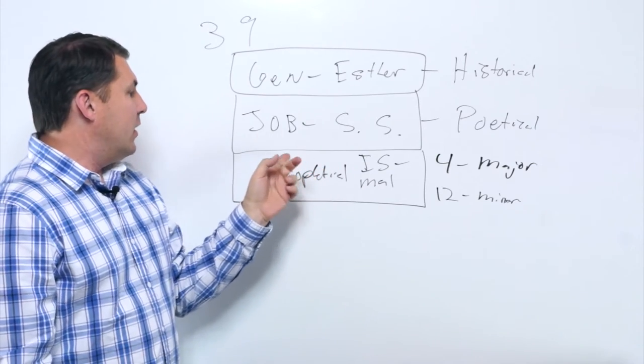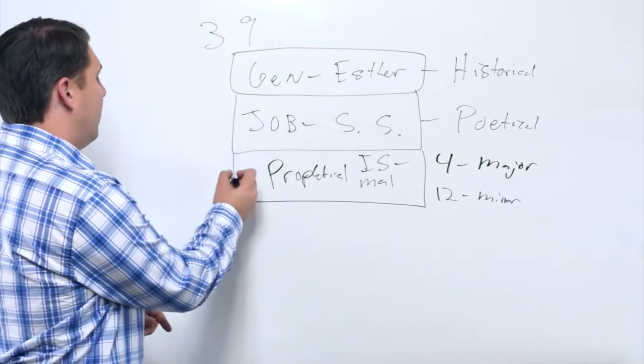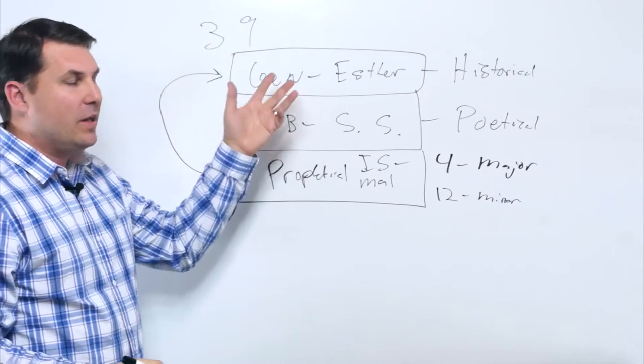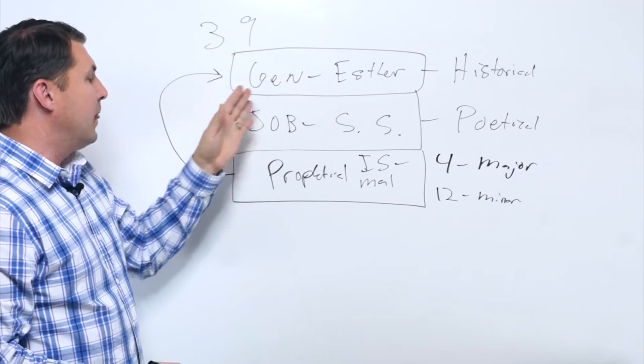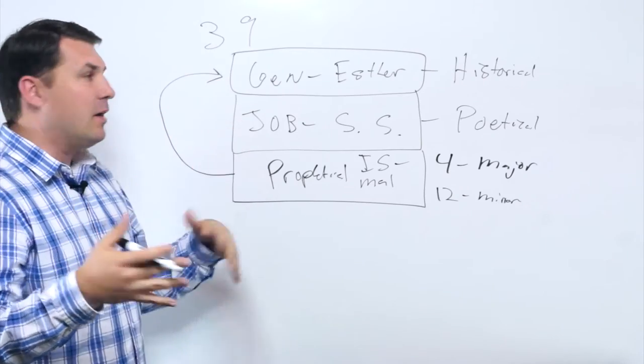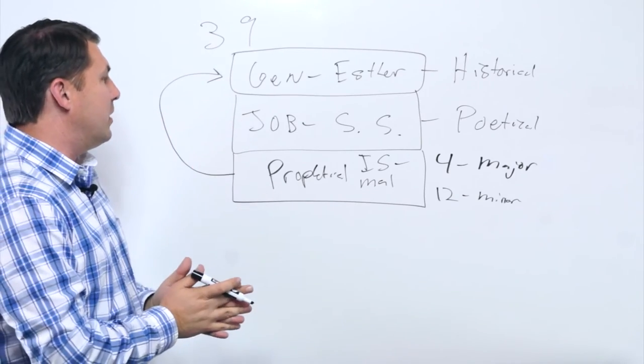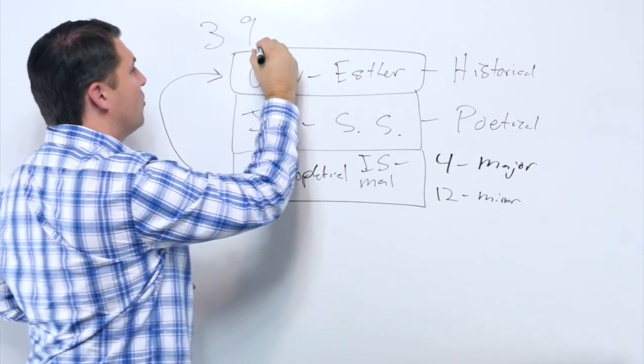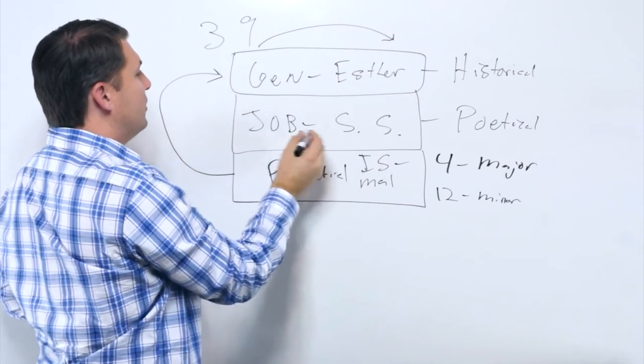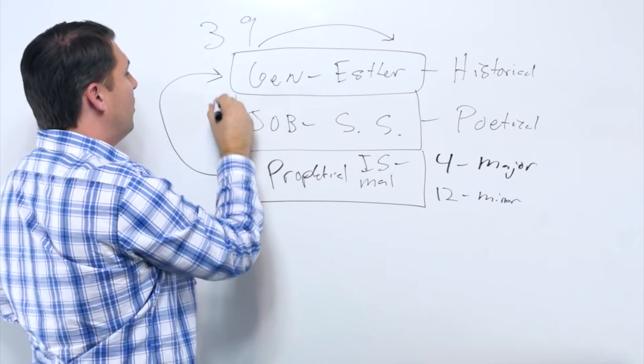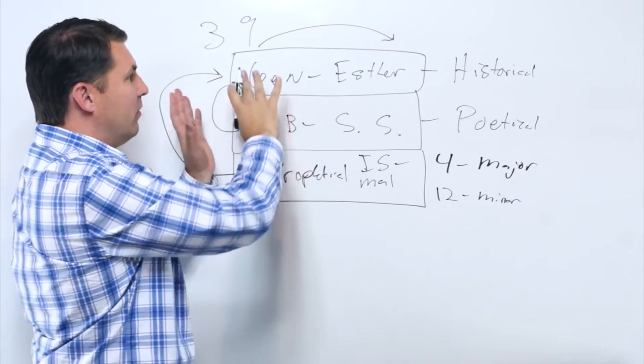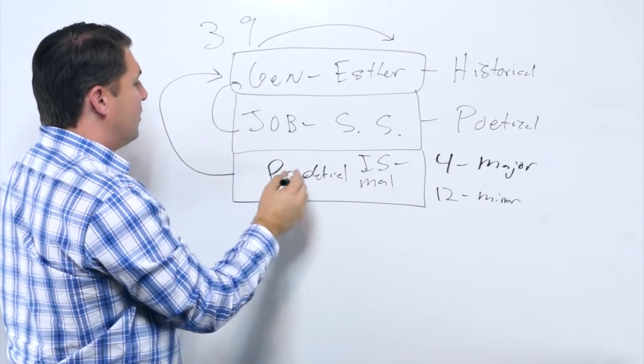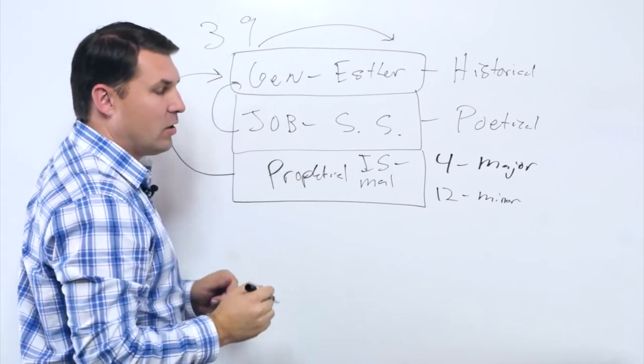These prophetic guys wrote during the historical times, primarily during the times of the kings. So when you look at your Bible now and understand what the Old Testament is about: Genesis through Esther gives a historical timeline start to finish; Job through Song of Solomon gives the poetical milieu of this historical timeline; and Isaiah to Malachi is the prophets during that historical time.